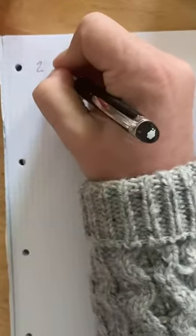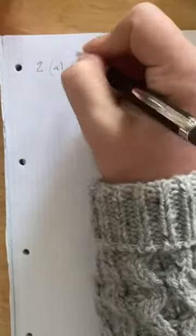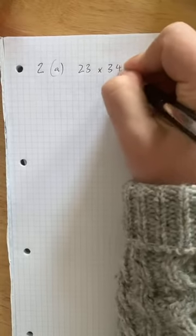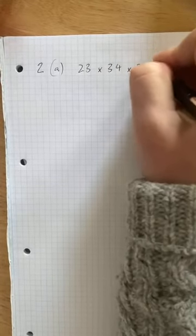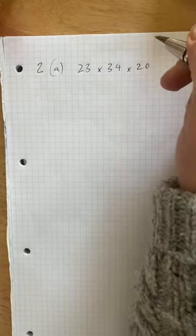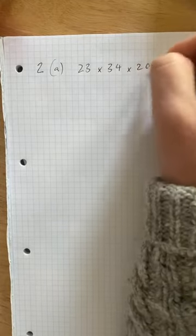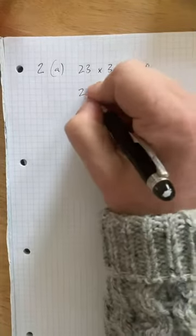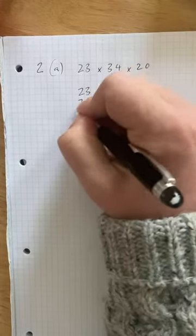Okay, question 2a. We've got 23 times 34 times 20. Okay, leave the 20 to last. 23 times by 34.